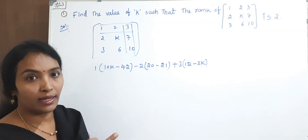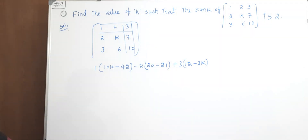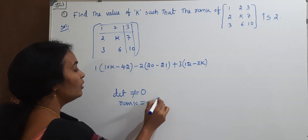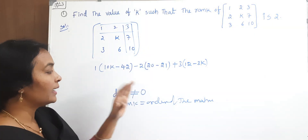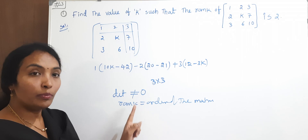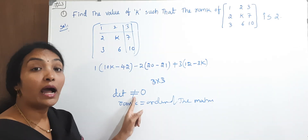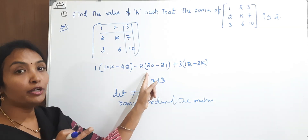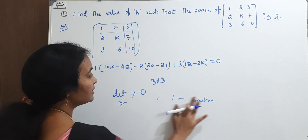Since rank is 2, the determinant of the 3×3 matrix is equal to 0. If the determinant is not equal to 0, the rank equals the order of the matrix. But for rank 2, the determinant of the 3×3 must equal 0. So we equate the determinant expression to 0.